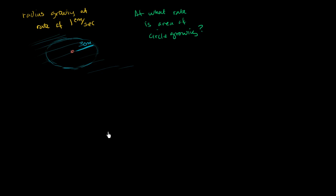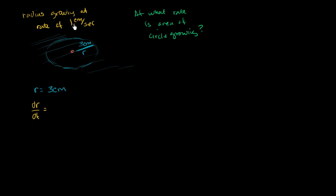Let's think about what we know and what we're trying to figure out. If we call the radius r, we know that right now r is equal to 3 centimeters. We also know dr/dt — the rate at which the radius is changing with respect to time — is 1 centimeter per second.